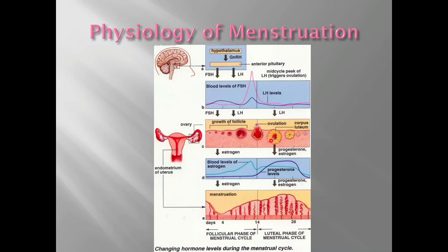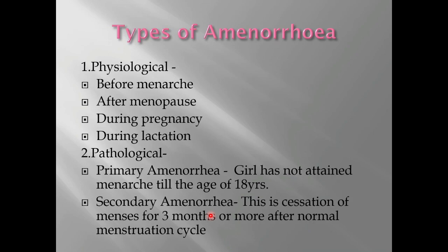After ovulation, the empty follicle that remains is called the corpus luteum, and it starts secreting progesterone as well. If fertilization does not occur, the corpus luteum degenerates, causing estrogen and progesterone levels to fall in the blood, and the endometrium sheds — that is menstruation. This was a brief overview of the physiology of menstruation.